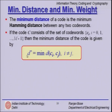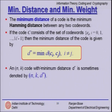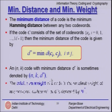We only consider different codewords, find all possible pairwise distances, and choose the minimum. Intuitively, minimum distance tells us how different any two vectors are — if they are similar, the distance will be less; if they are very different, the distance will be more. An (n, k) code with minimum distance d* is sometimes denoted as (n, k, d*).